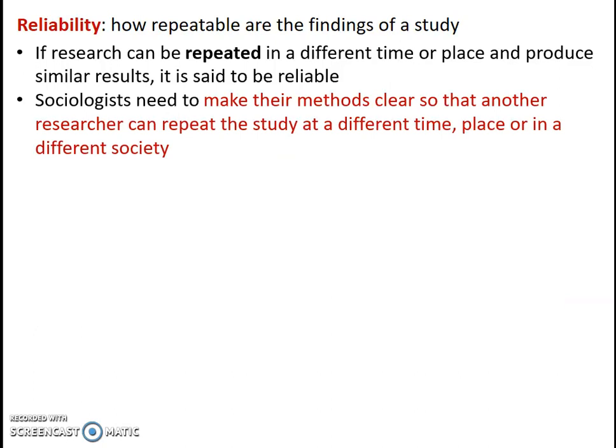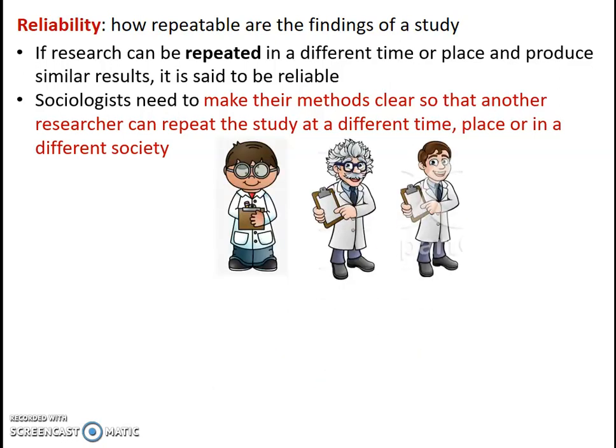In order to be reliable, sociologists need to make their methods really clear so that another researcher can repeat the study at a different time, maybe even a different society completely. That makes it easy to compare studies across years or countries. I'll give you an example — three guys with a clipboard all using exactly the same set of questions and the same research method.